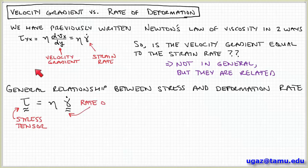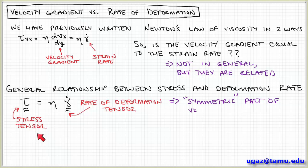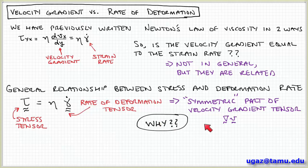In general, remember that stress is a tensor quantity because it depends not only on the direction of the force but also the orientation of the surface, so in general it would have nine components. We have a stress tensor, and that's equal to the rate of deformation, which is also a tensor quantity. It turns out that this rate of deformation tensor is actually the symmetric part of the velocity gradient tensor — so it's not exactly equal to the velocity gradient, but it's equal to some component of it.